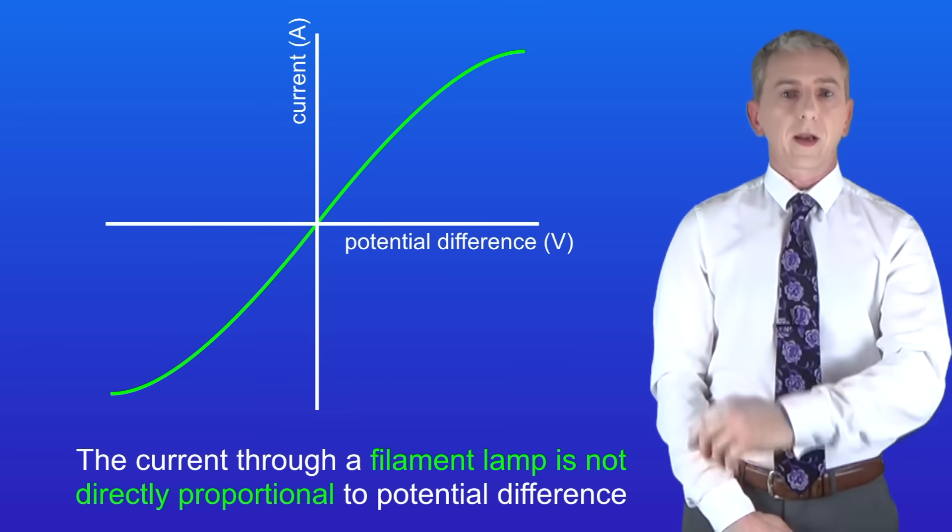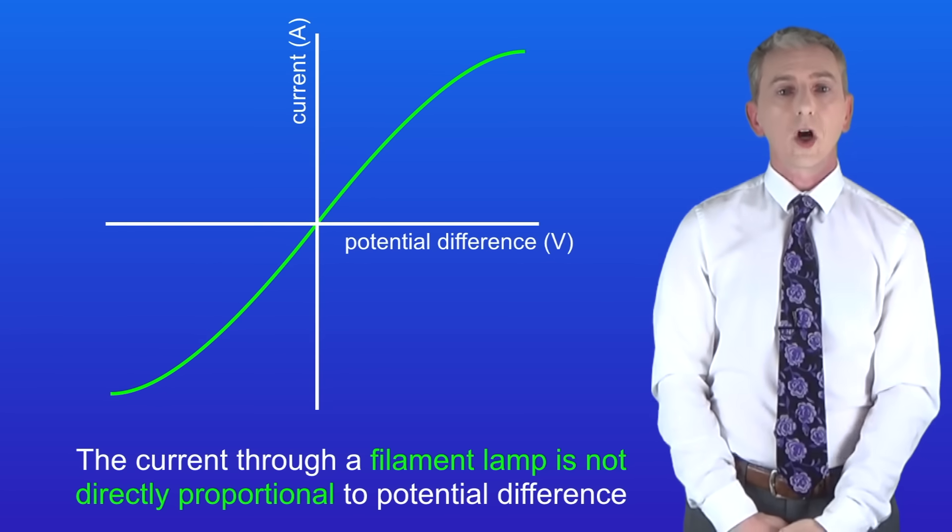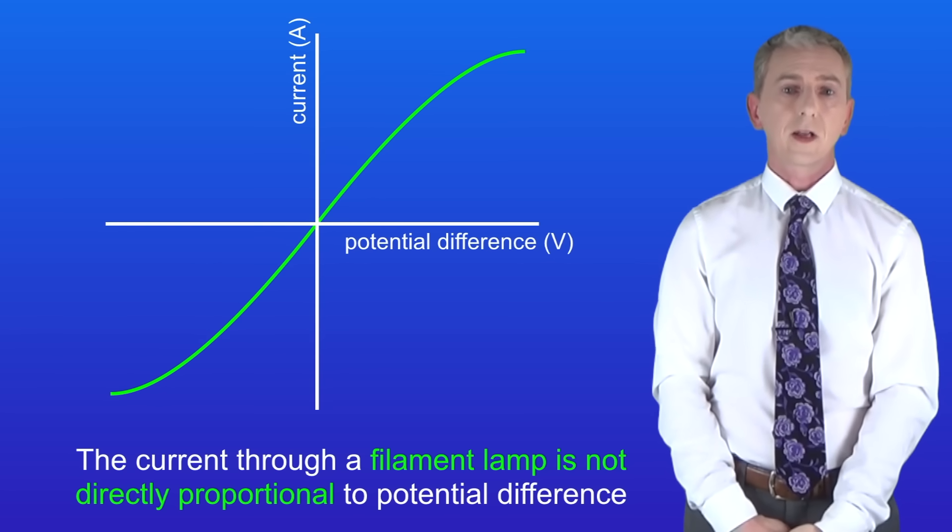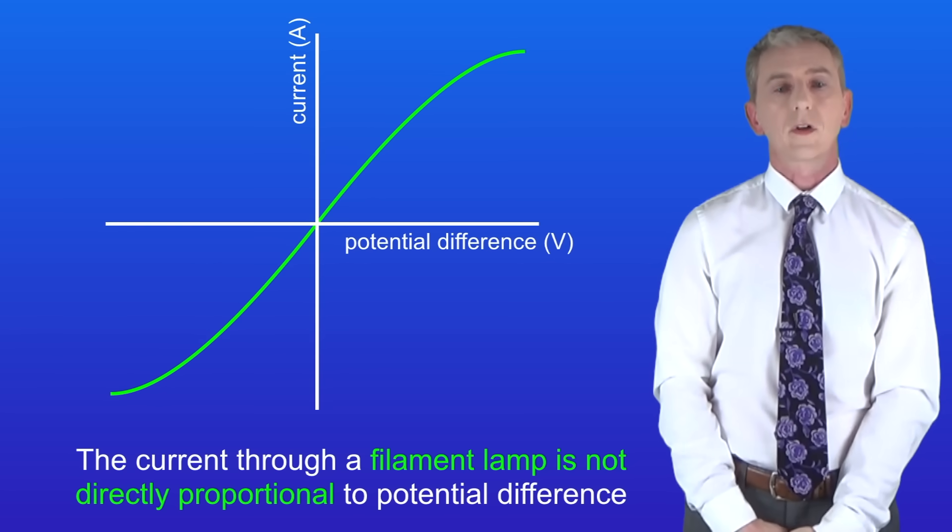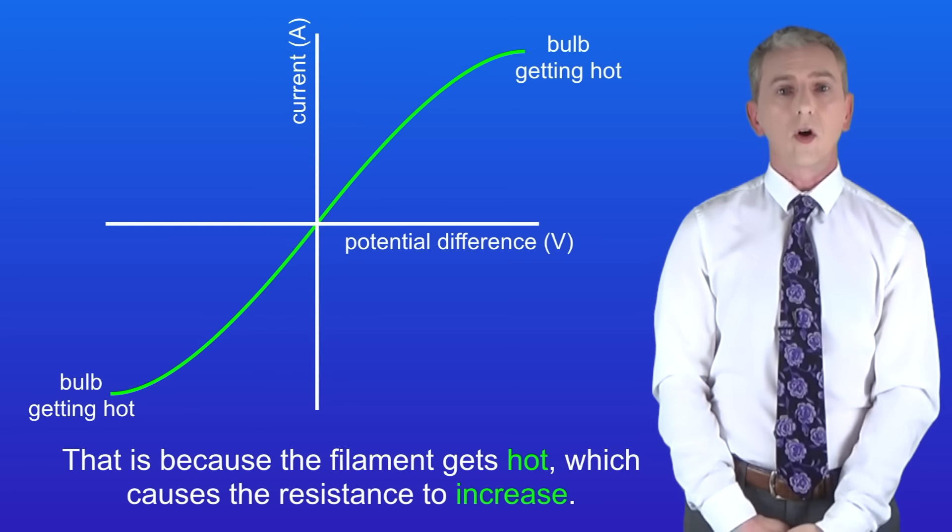So here's the graph that we get from that experiment and as you can see the current through a filament lamp is not directly proportional to the potential difference. That's because the filament gets hot and that causes the resistance to increase.